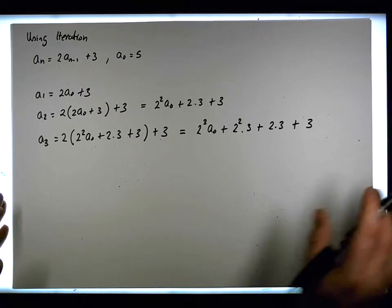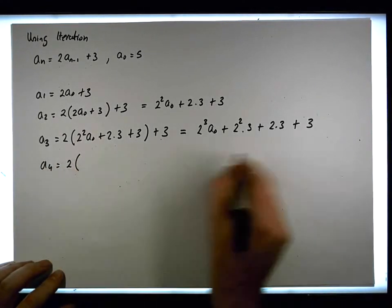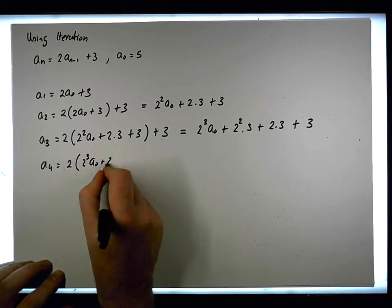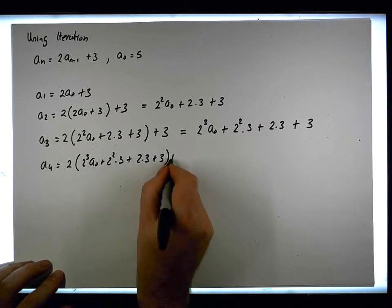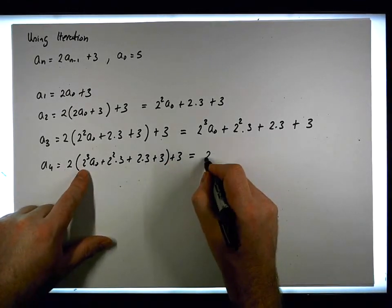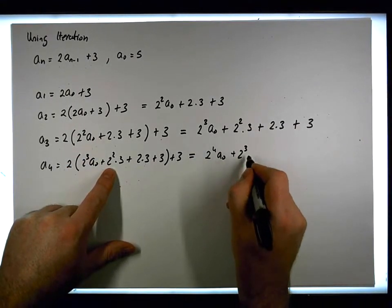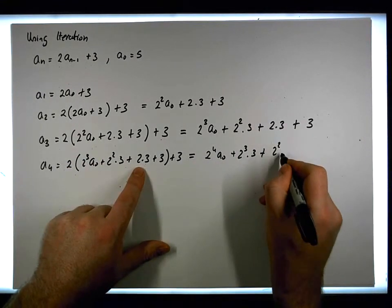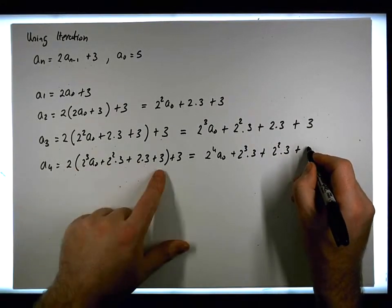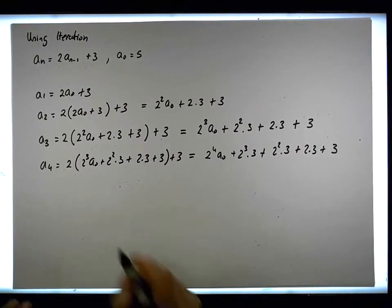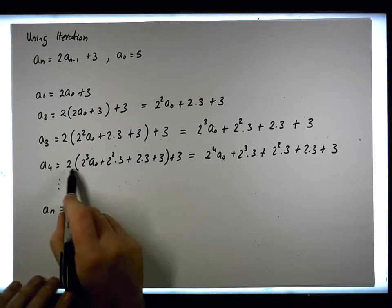We can continue in this fashion. Let's do one more: a_4 is 2 times the previous one, which is 2 cubed·a_0 plus 2 squared times 3 plus 2 times 3 plus 3 plus 3, giving us a_4 = 2^4·a_0 plus 2 cubed times 3 plus 2 squared times 3 plus 2 times 3 plus 3.